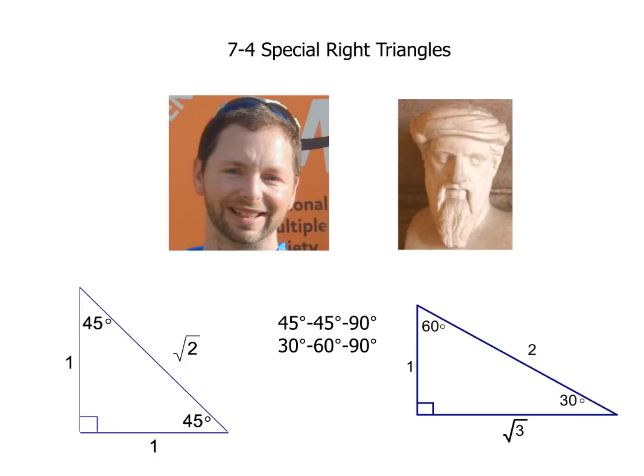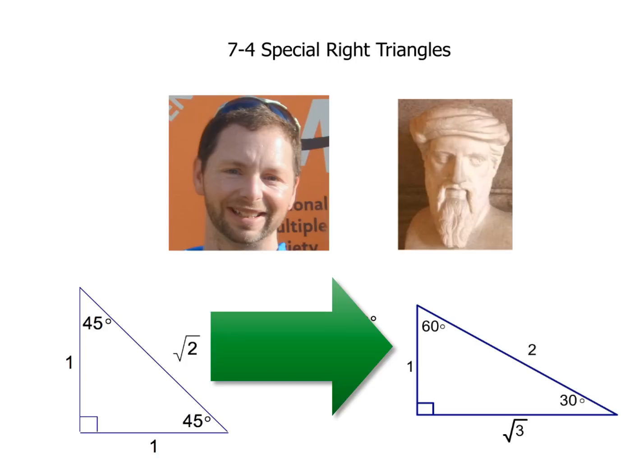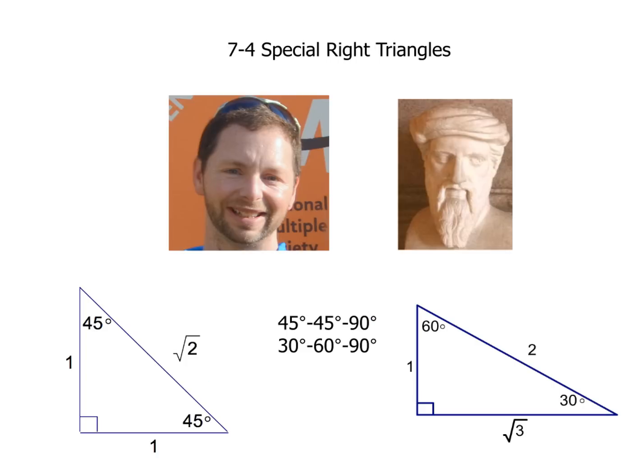Now this is a triangle depicted on the right-hand side of your screen. That triangle has a ratio of 1 to 2 to square root of 3 for those side lengths, and the important thing to remember is where all of those are located. Each side is going to have a very particular name, and we're going to learn what those names are here momentarily.